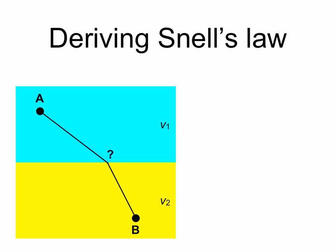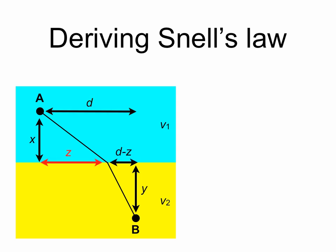What we want to know is where the point on the interface will be that minimizes the total transit time. Let's label some sides and put some math into this. Point A is a distance x from the interface, and point B is a distance y from the interface. The total horizontal distance between A and B is length d. The horizontal distance between A and the point on the interface where light hits is length z, and the corresponding horizontal distance between B and that point is d minus z.